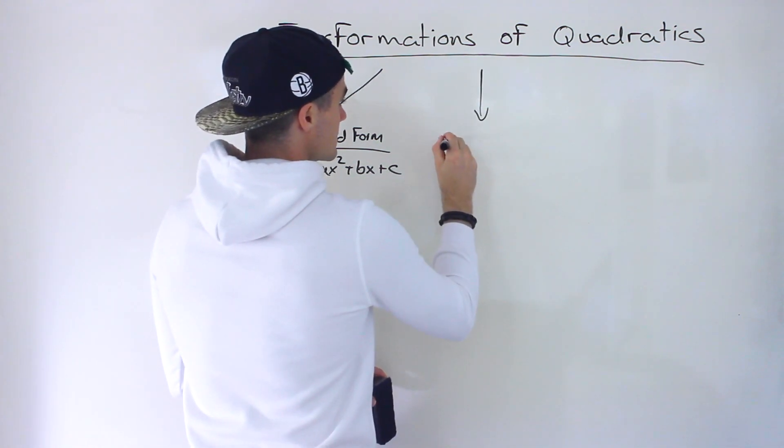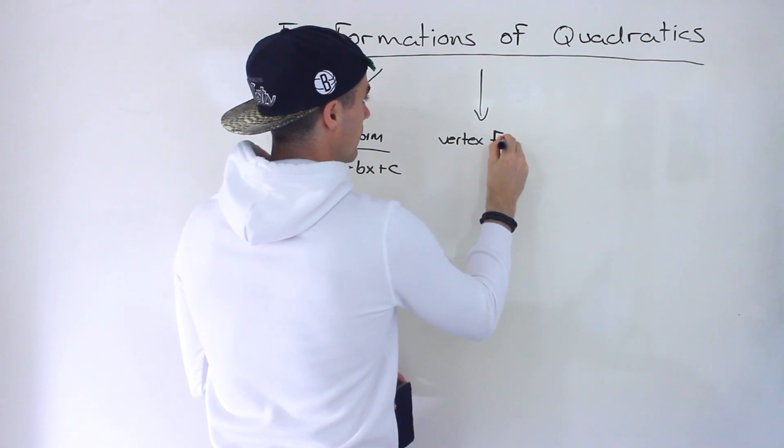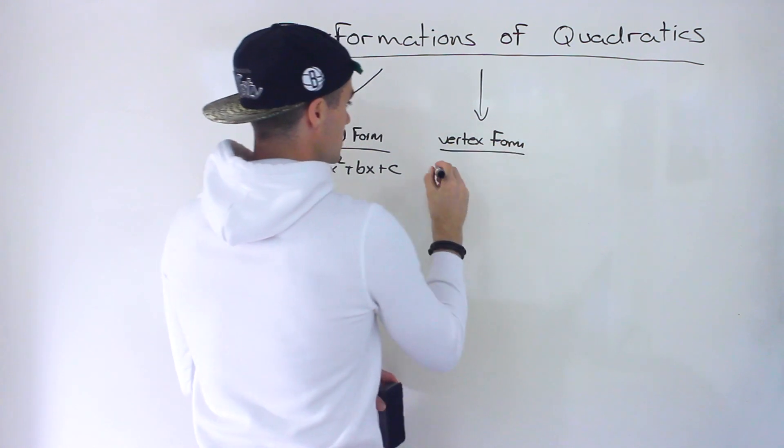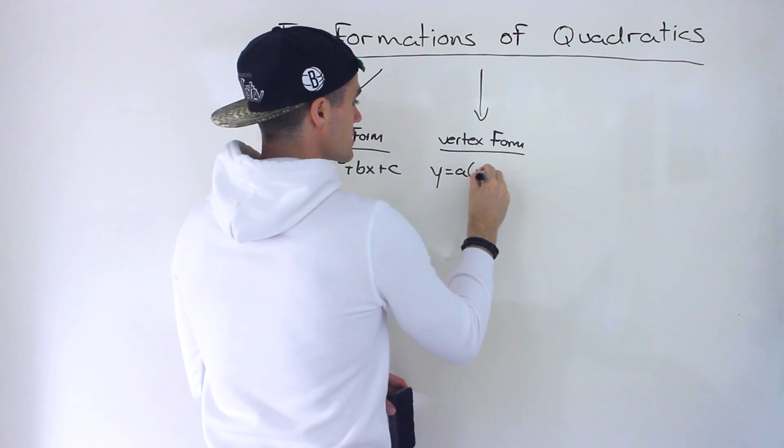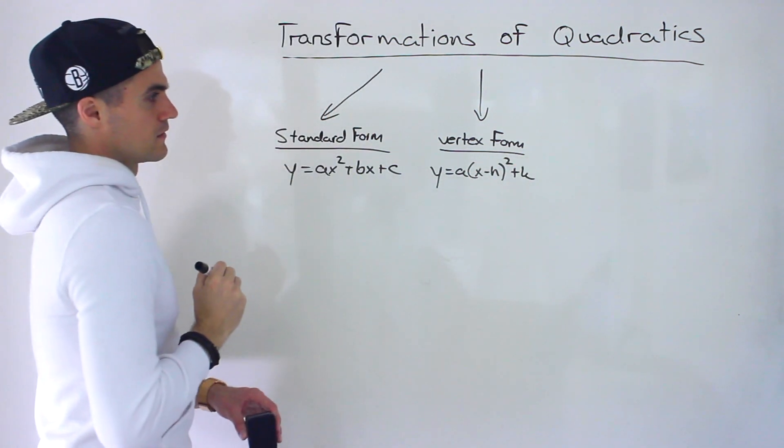It could also be in something called vertex form. Vertex form is basically a quadratic that looks like y equals a times the quantity x minus h squared plus k.